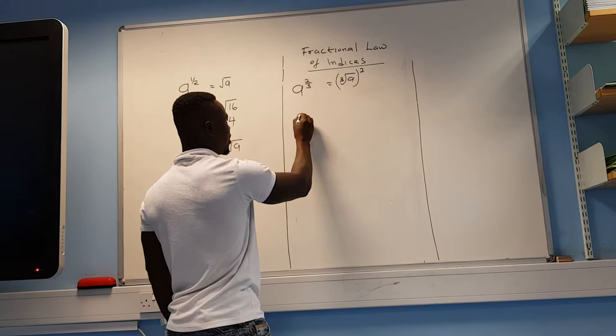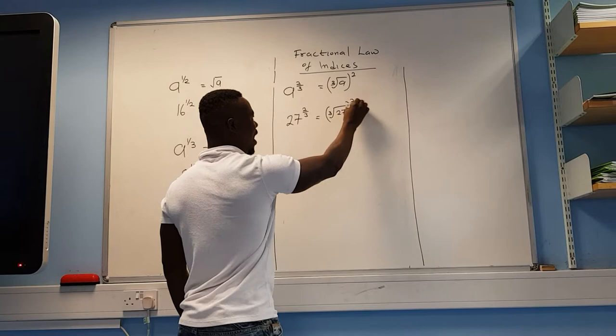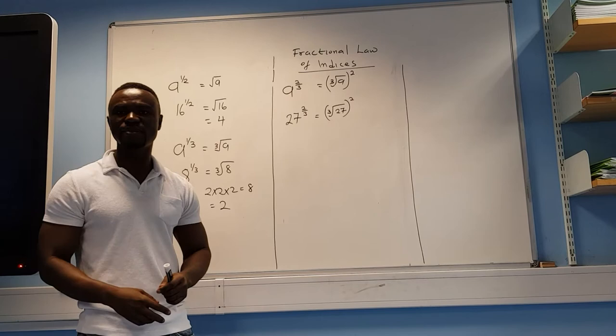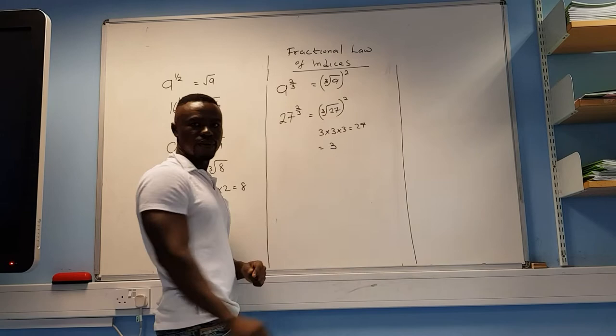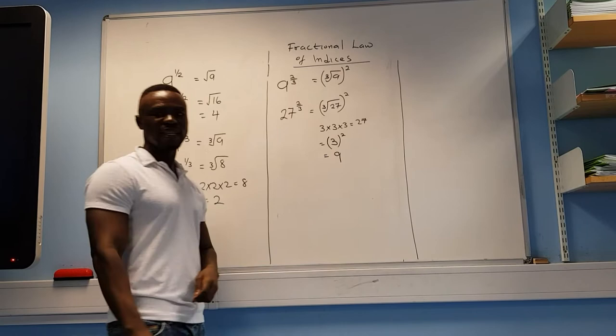Let's work through 27 to the power of 2 over 3. This means take the cube root of 27, then square the answer. Find a number that when multiplied by itself 3 times gives 27: 3 times 3 is 9, and 9 times 3 is 27. So the cube root of 27 is 3. The numerator says square it, so 3 squared equals 9. The answer is 9.